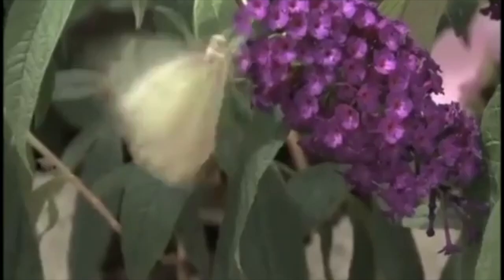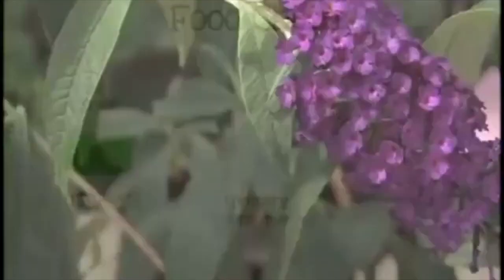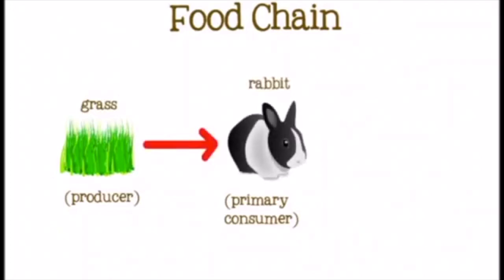To understand the relationships between these organisms, scientists organize living things into food chains. A food chain describes how energy in an ecosystem flows from one organism to another. Like this one — it starts with grass, which is the producer, then we have the rabbit, then we have the fox. Almost all food chains begin with producers such as green grass.